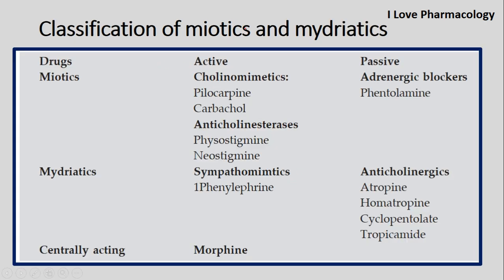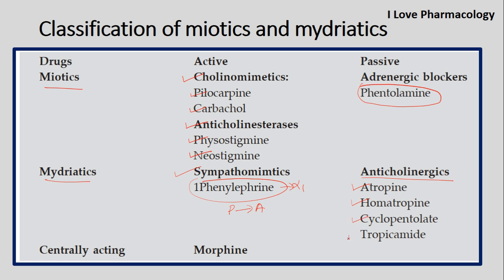Coming to the classification of miotics and mydriatics: under miotics, cholinomimetics act on M3 receptors directly — examples are pilocarpine and carbachol. Anti-cholinesterase drugs produce active miosis — examples are physostigmine and neostigmine. Phentolamine (adrenergic/alpha-blocker) can produce passive miosis but is not currently used. Under mydriatics, sympathomimetics such as phenylephrine act on alpha-1 receptors and produce active mydriasis. Anticholinergic drugs — examples: atropine, homatropine, cyclopentolate, tropicamide — produce passive mydriasis.